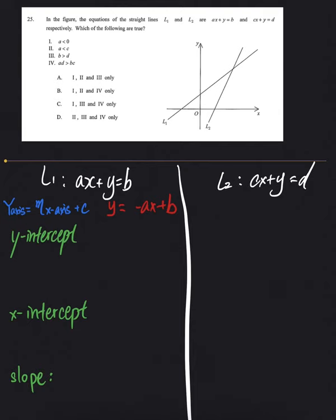So from our first equation, what is our slope? Slope is anything jo bhi x ke saath hai, so it is negative a from the equation. How about y-intercept? Y-intercept means aapko x ko zero banana padega. After that, jo bhi value aapko aati hai, wo y-intercept hogi. So y equals to negative a times zero plus b, which gives b. So haamari y-intercept b hai.